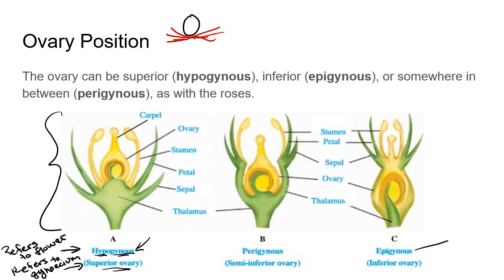On the other side, an epigynous flower has an inferior ovary — it is located below the rest of the flower. So the flower is 'epi' (on top of) the gynoecium, but the ovary is inferior, below the rest of the flower. These terms are paired and sound counterintuitive, so think about them logically with respect to each other.